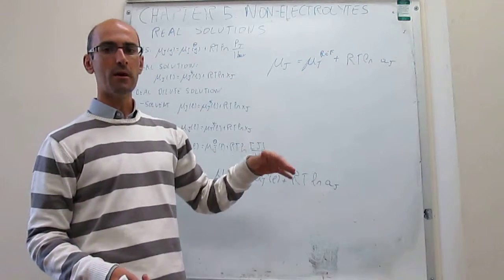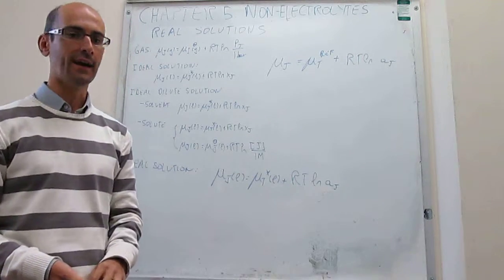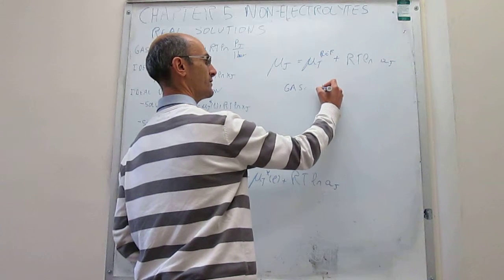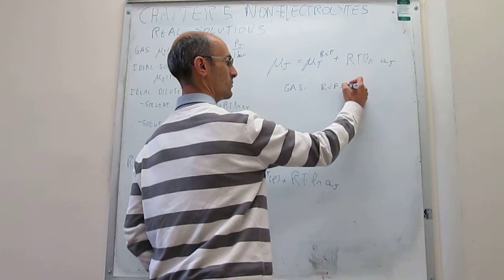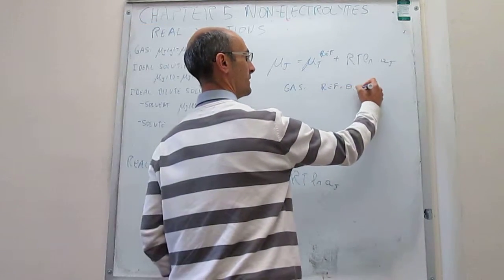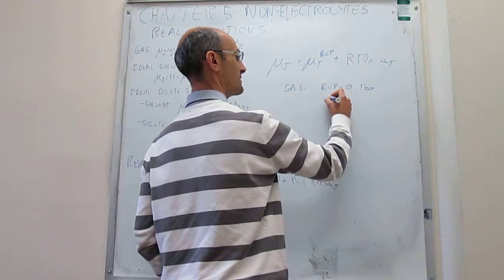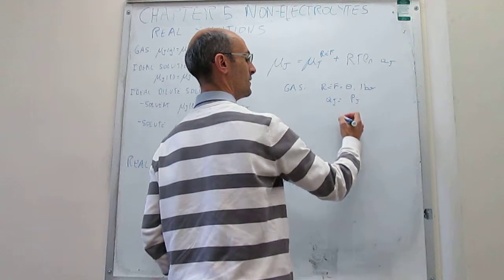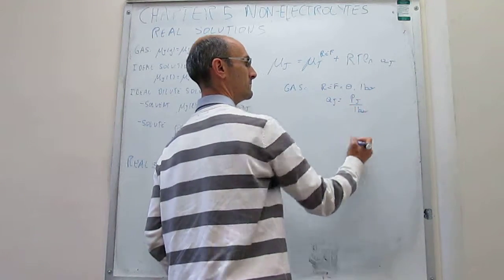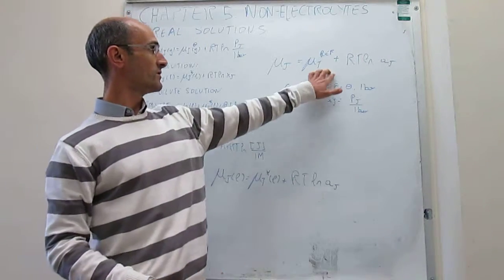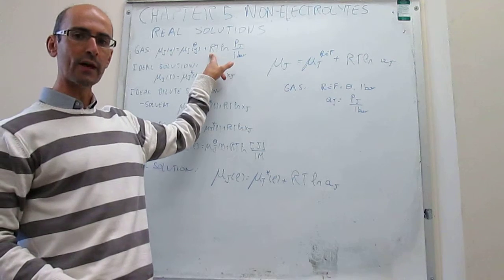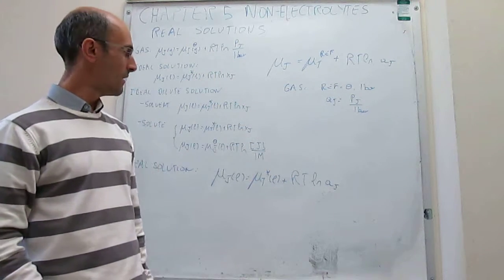Suppose you're in the case of an ideal gas. The reference is going to be equal to the standard state for a pressure of one bar, and then your activity A sub J will be just the partial pressure of J divided by one bar. You can use this expression with this mapping and you will recover exactly the expression we have for the chemical potential of an ideal gas.